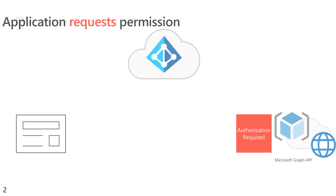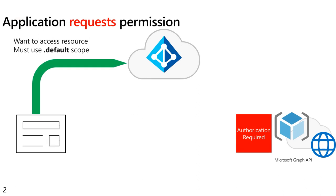In this case, however, the application must use the request for a .default scope. So you ask to acquire a token with the .default scope.